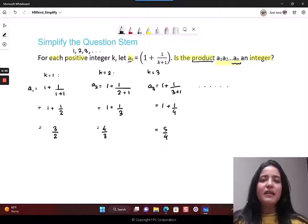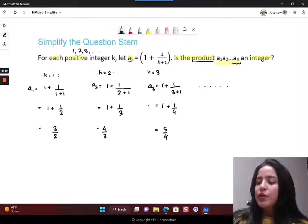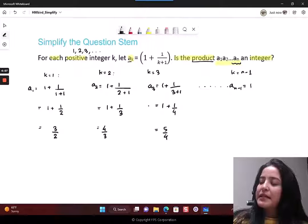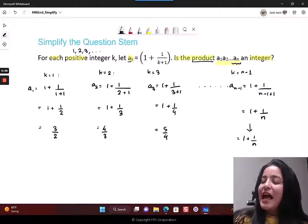Till the end, just look at what the last term is in the product. The last term is an. Just to be able to see the pattern, I'm going to write k is n minus 1, just one term before the last.